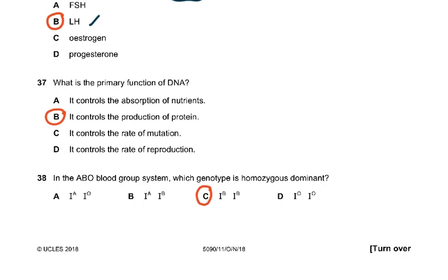Question 37: What is the primary function of DNA? It controls the production of proteins. It doesn't control nutrients, the rate of mutation, or the rate of reproduction. DNA controls whether proteins like insulin should be made or not — it contains genes, which are the genetic information — the recipe to make a protein.